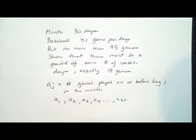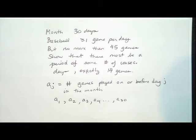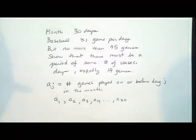Since there's at least one game on every day, no two of these numbers are the same — they're all distinct because every number is at least one more than the last. We're looking for a period of consecutive days with exactly 14 games, which means we need one of these numbers to be exactly 14 more than another. So we make a second list: a_1+14 through a_30+14.